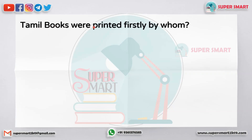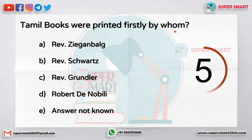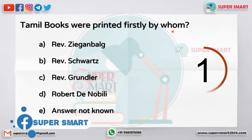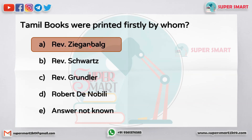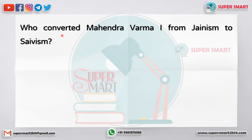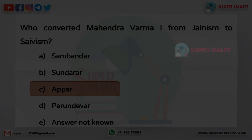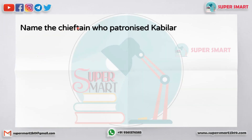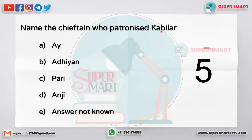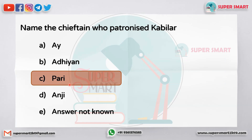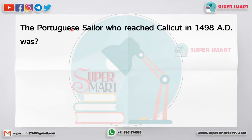Next is history and culture of India questions. First question: Tamil books were printed firstly by whom? The answer is C.N. Paul. Who converted Mahendra Varma 1 from Jainism to Saivism? The answer is Appar.